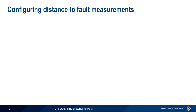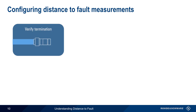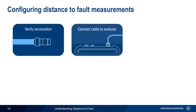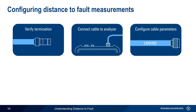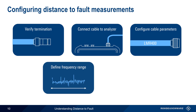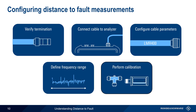There are five basic steps in configuring distance to fault measurements on a VNA. These are: verifying cable terminations, connecting the cable to the analyzer, configuring the cable parameters, defining the sweep frequency range, and performing a calibration. Let's go through each of these configuration steps, starting with the cable termination.